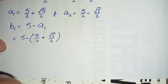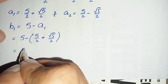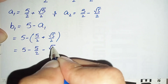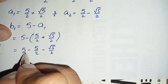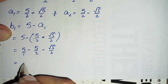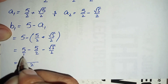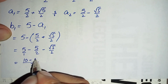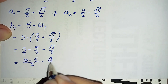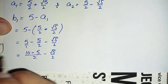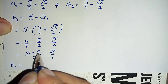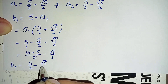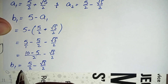Multiplying the negative sign inside the parenthesis gives 5 minus 5/2 minus square root of 5 divided by 2. Taking the LCM of 1 and 2, which is 2: this becomes 10/2 minus 5/2 minus square root of 5 divided by 2. So b₁ equals 5/2 minus square root of 5 divided by 2.